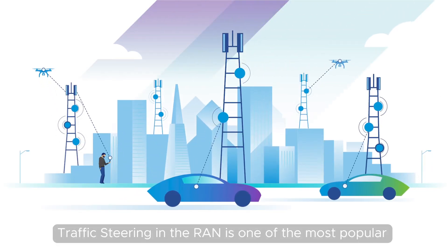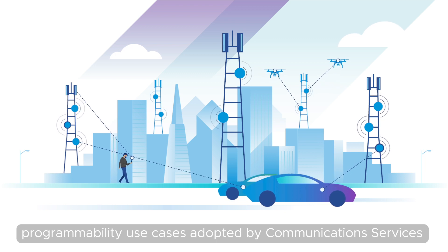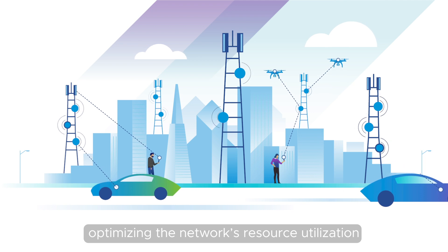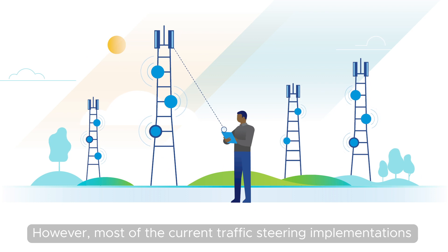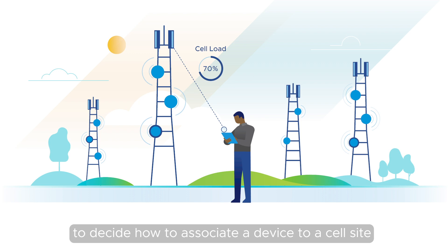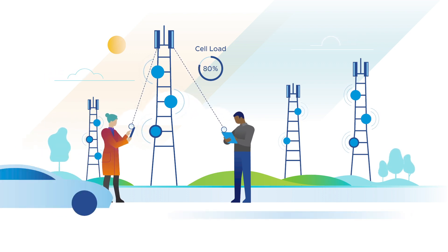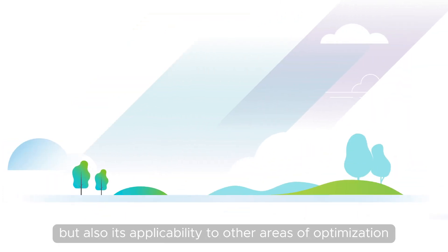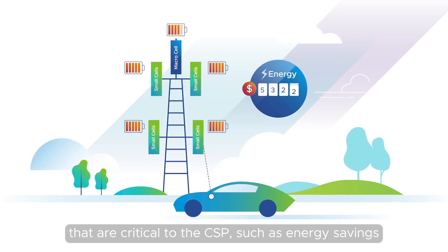Traffic steering in the RAN is one of the most popular programmability use cases adopted by communication services providers, or CSPs, as it has an immediate business impact by optimizing the network's resource utilization. However, most current traffic steering implementations are based on algorithms that solely evaluate radio conditions to decide how to associate a device to a cell site and offer few steering options. This narrow vision not only limits the effectiveness of the technology, but also its applicability to other critical areas of optimization such as energy savings.